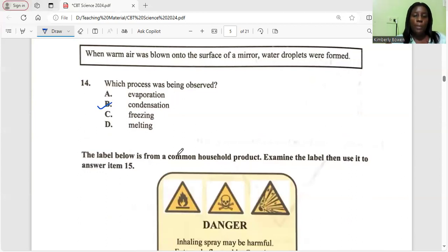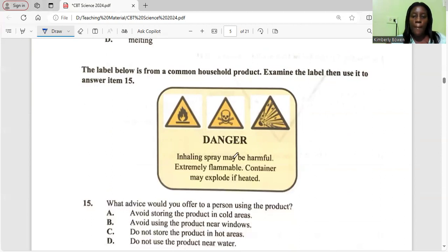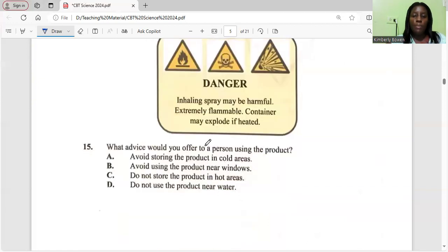The label below is from a common household product. Examine the label, then use it to answer item 15. What advice would you offer to the person using this product? Avoid storing the product in cold areas, avoid using the product near windows, do not store product in hot areas, or do not use product near water. Here's the correct answer: do not store in hot areas because it's heated.